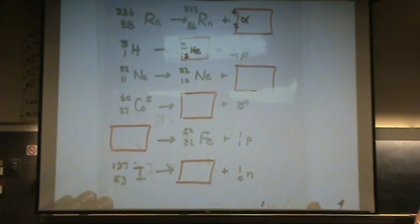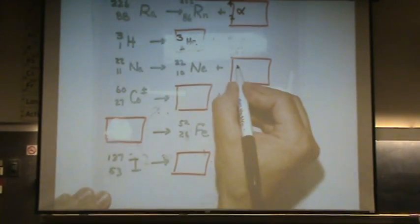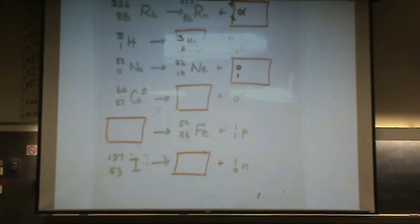Okay, let's look at the next one. 10 plus 1 is 11. 22 plus 0 is 22. What the heck is that?